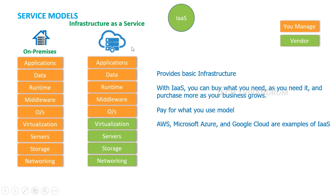In the first classification of the service model, that is Infrastructure as a Service (IaaS), the first four components — networking, storage, servers, and virtualization — are managed by the vendor. We only need to take care of the operating system, middleware, runtime, data, and applications. This provides the basic infrastructure, and with IaaS you can buy what you need as you need it, purchase more as your business grows, and pay for what you use. The main vendors that provide IaaS are AWS, Microsoft Azure, and Google Cloud.